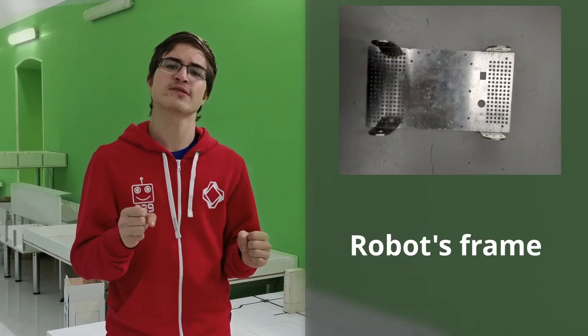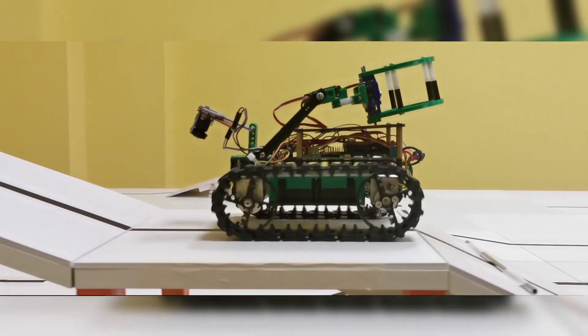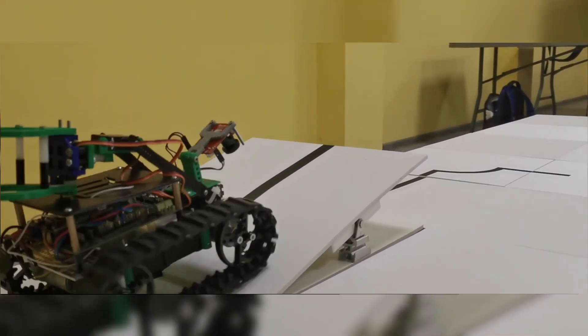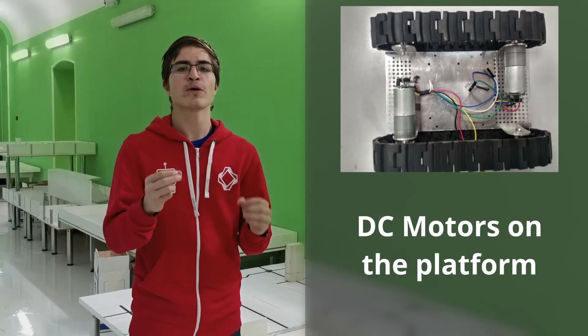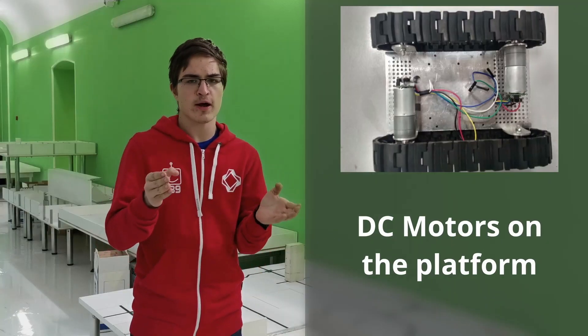So, as I said before, the platform is tracked. In our opinion, it's the best choice, because the robot can overcome obstacles better than robots with wheels. Our robot is driven by two DC motors that are powered by 12 volts.